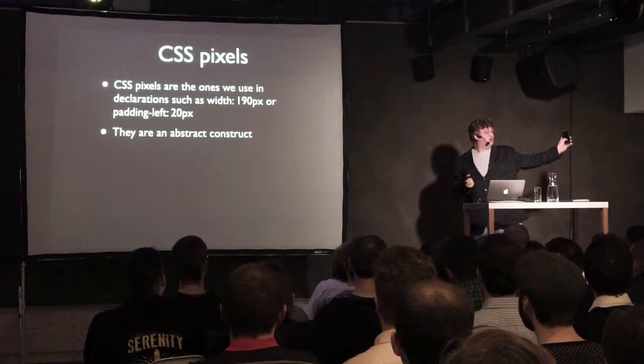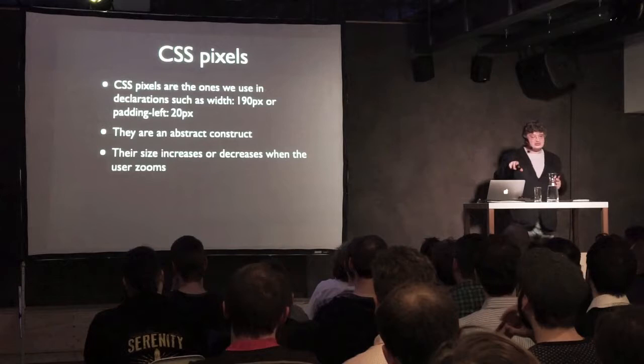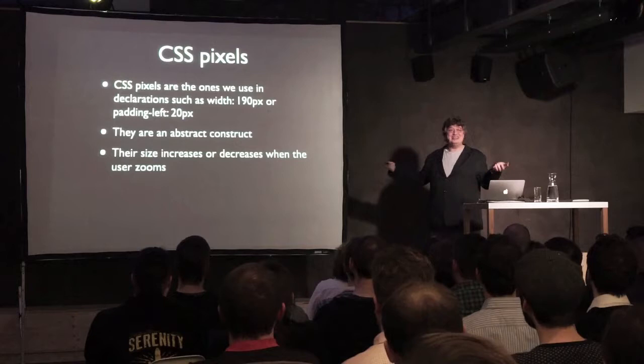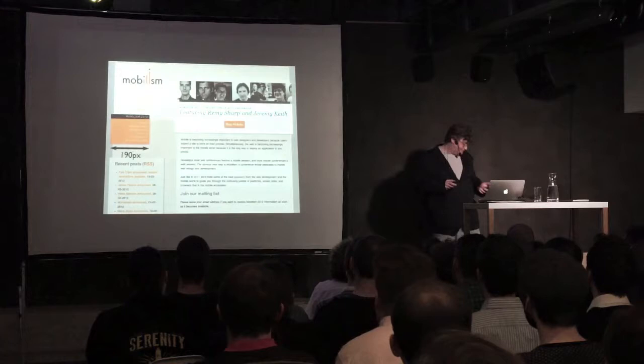CSS pixels do not actually have anything to do with the physical pixels on the screen of any device. Their size increases or decreases when the user zooms — that may sound complicated, but we'll get back to that. This is one of the reasons CSS pixels have to exist: you have to give the user a way of zooming in on your website, on mobile certainly, but also on desktop.